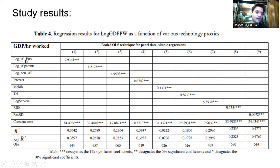For example, in AI, we see that AI publications has a coefficient of 7.93, AI patents has a coefficient of 4.21, and non-AI patents has a coefficient of 4.95. These coefficients basically mean that a 1% increase in this variable would roughly cause a 7.93% increase in GDP per hour worked.